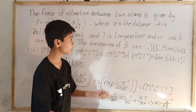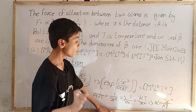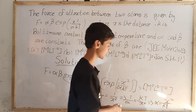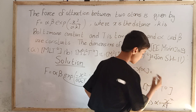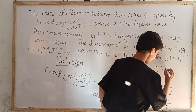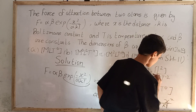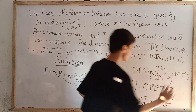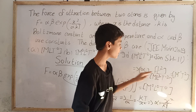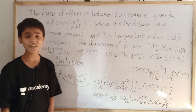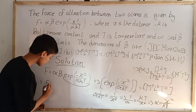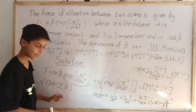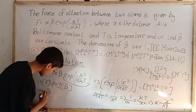The key fact is that K·T has the same dimensions as energy, i.e., ML²T⁻². So the dimensions of alpha = L² / (ML²T⁻²) = L²·M⁻¹T²/L² = M⁻¹T². Therefore, the dimensional formula for alpha is M⁻¹T².